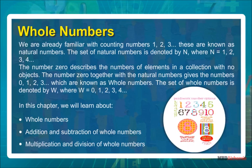We are already familiar with the counting numbers one, two, three, and so on. These are known as natural numbers. The set of natural numbers is denoted by N, where N is equal to {1, 2, 3, 4, ...} and so on.